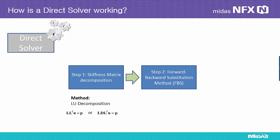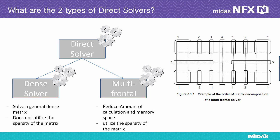A direct solver obtains the solution to a system of equations in two steps. The first step involves matrix decomposition and the second step performs the forward-backward substitution method. The LU decomposition method, applied to a general asymmetrical matrix, is used to decompose a stiffness matrix for the process of finite element analysis. An important aspect of using a direct solver is to properly use the sparsity of the matrix. Generally, the stiffness matrix K, generated in the process of finite element analysis, is a sparse matrix containing numerous zero terms, and the amount of calculations and required memory space significantly change depending on the method of using the sparsity.